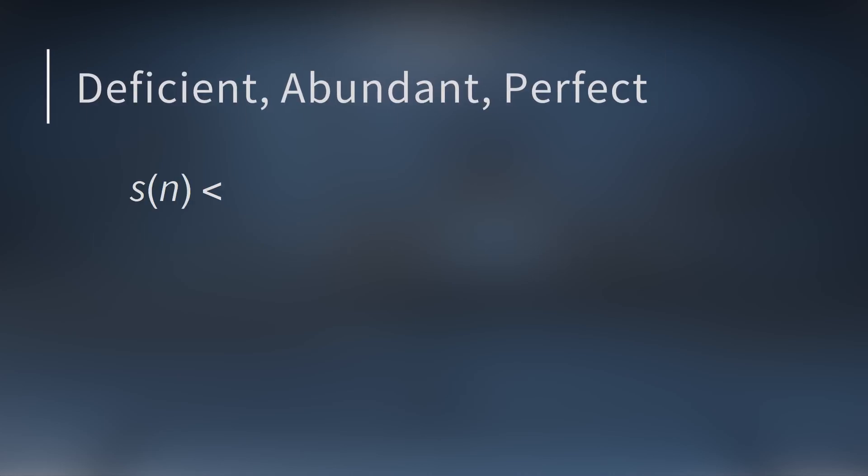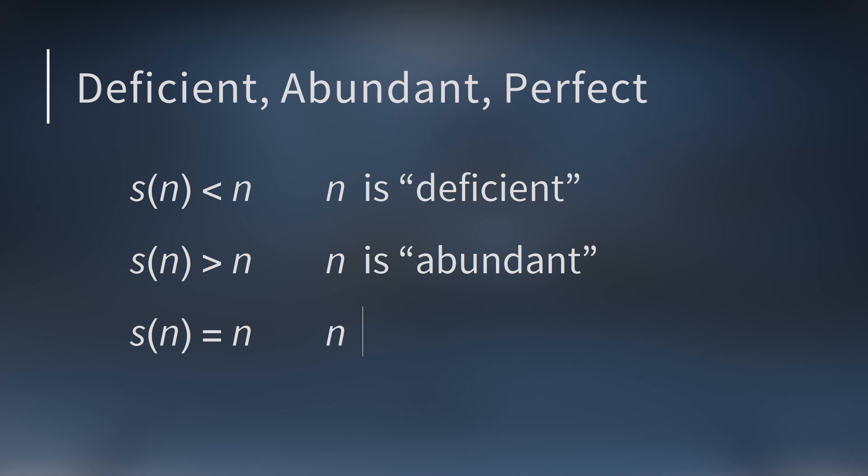So people broke all the integers up into three different categories. If the sum of the proper divisors is less than the number, we call it a deficient number. If the sum of the proper divisors is larger than the number, we call it an abundant number. And if the sum of the proper divisors is equal to the number itself, we call it a perfect number.